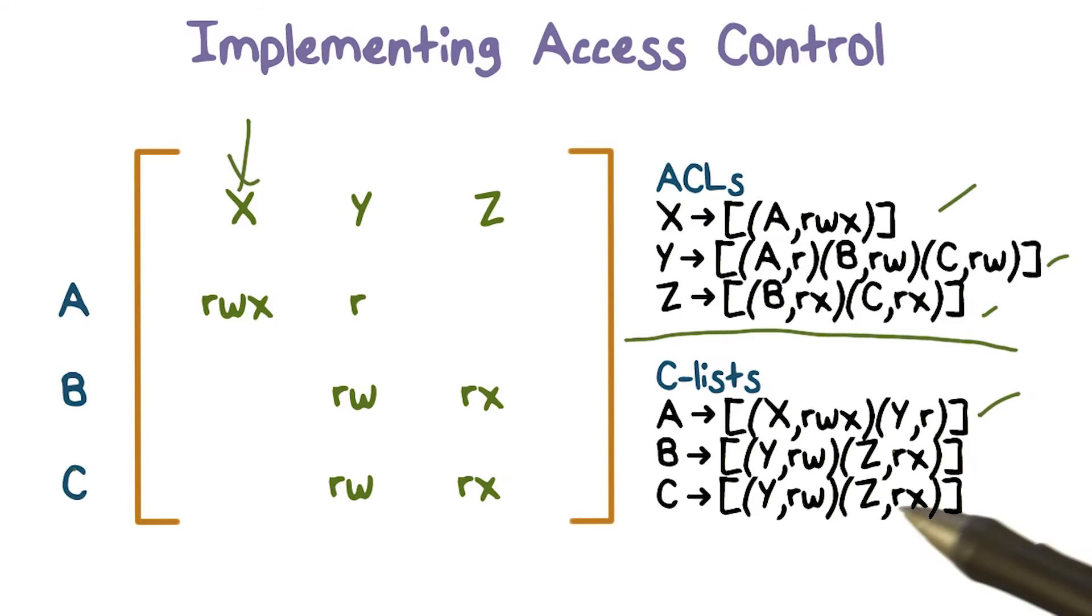The C-list is going to look the same for user C because B and C have the same kind of access given the set of resources we have here.